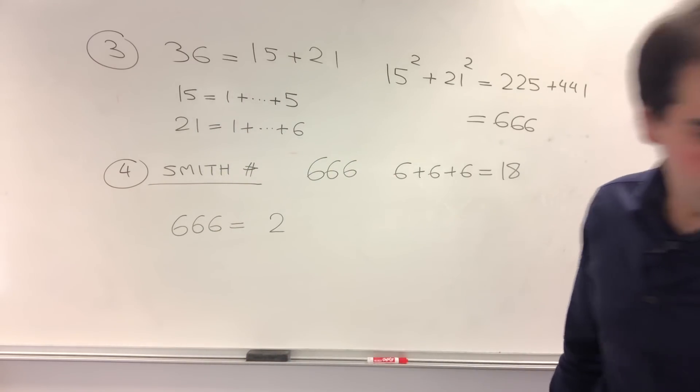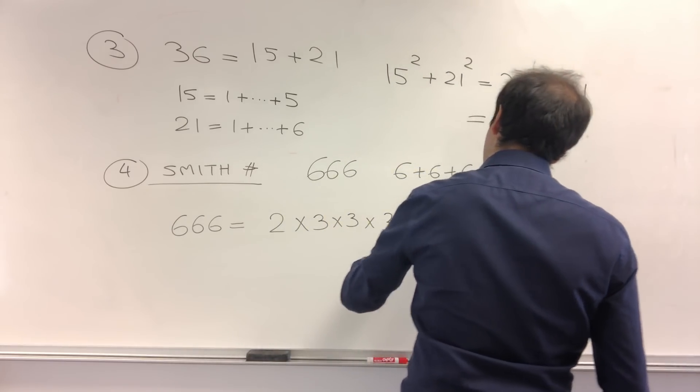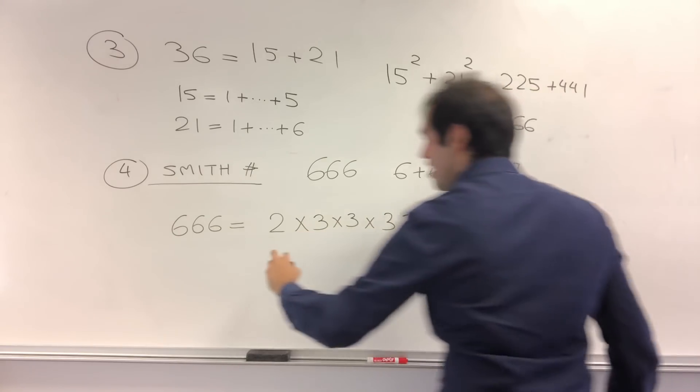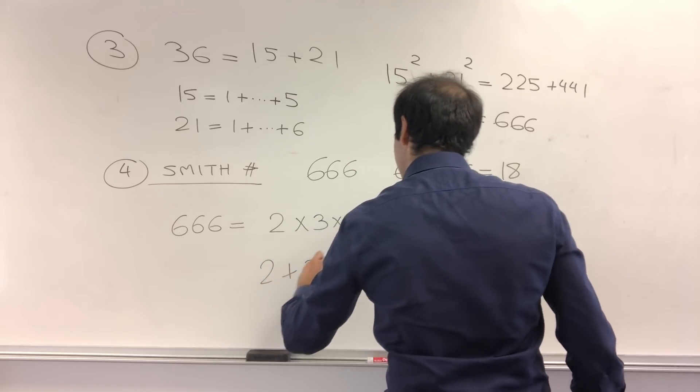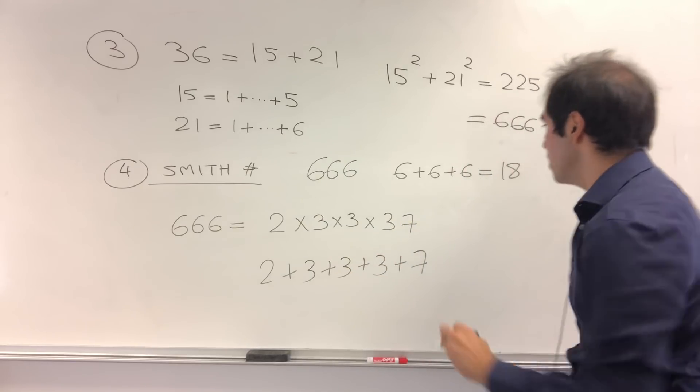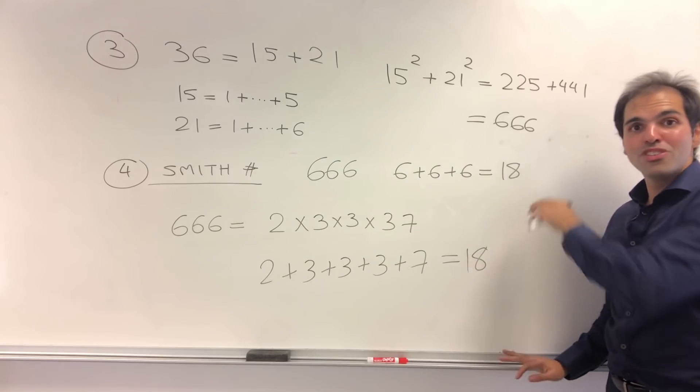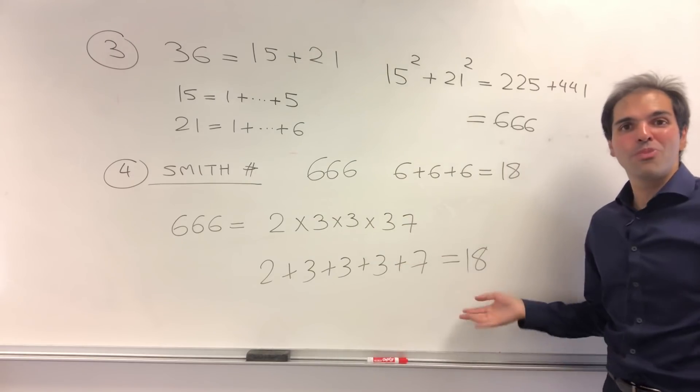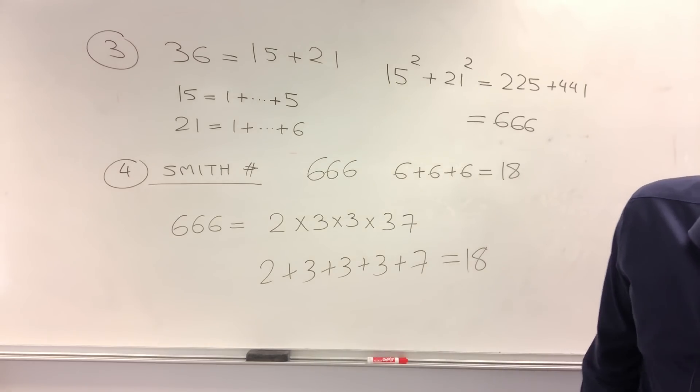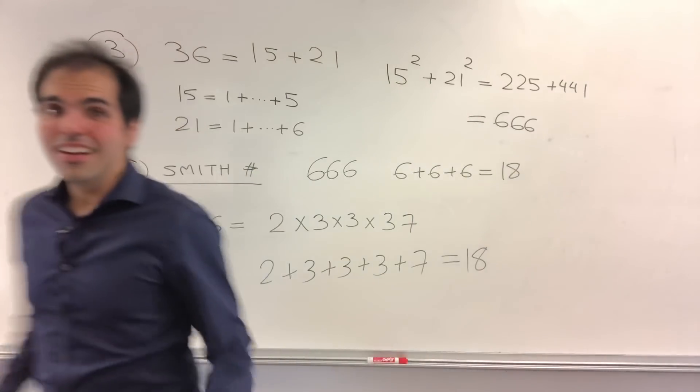Turns out 18 also kind of appears in prime factorizations, because if you factorize 666, well, that becomes, I think, 2 times 3 times 3 times 37. And here's the nice thing. What happens when you take the sum of all the digits? Well, you get 2 plus 3 plus 3 plus 3 plus 7. So 9 plus 9, which is 18. So if the sum of the digits is equal to the sum of the prime decomposition, that's what's called a Smith number, which is, it's very Smith of us, I guess.